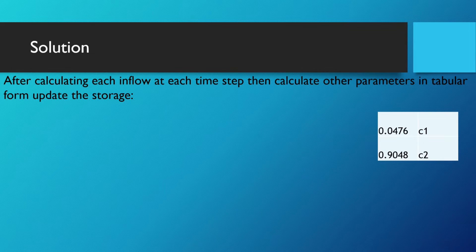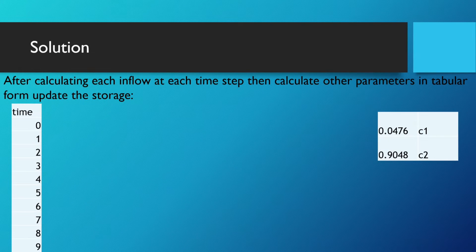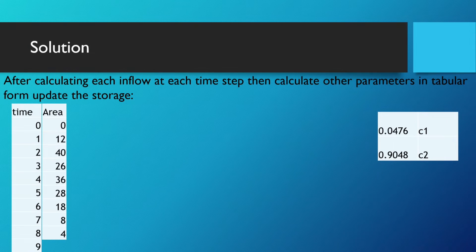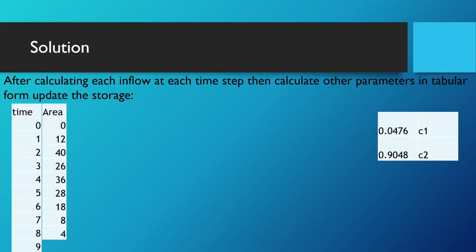After calculating each inflow at each time step, then calculate other parameters in tabular form as mentioned below. First, we will list the time as given in the table from 0 to 8, where 9 is extra we have considered. Then we will take the area as given in the question. For 0 it is not given. For 0 to 1 the area is 12 km². For 1 to 2 it is 40. Similarly, other values are kept over here.